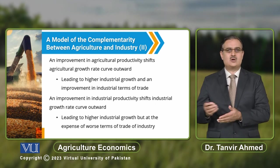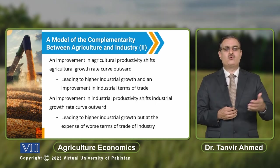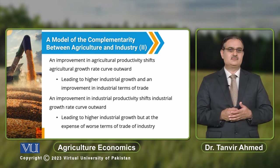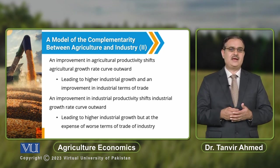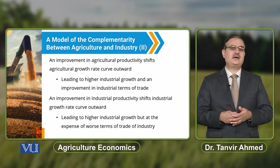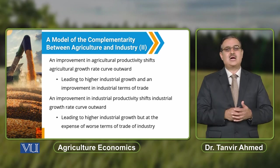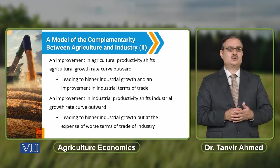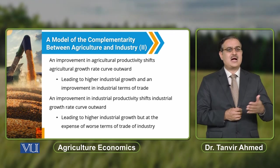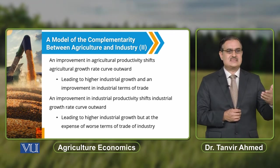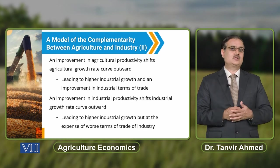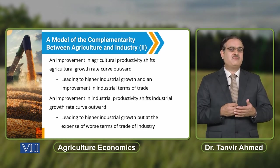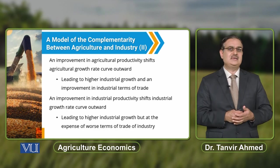Keeping other things constant, if there is an improvement in industrial productivity, the industrial growth rate curve will shift outward. Because of that outward shift of the industrial growth curve, it will result in higher industrial growth, but at the expense of worse terms of trade for the industry.